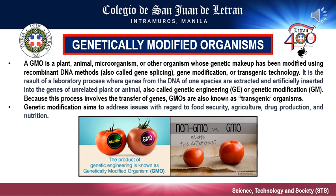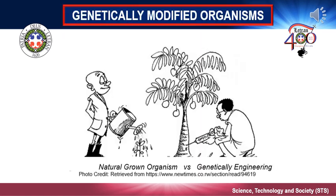Genes have been transferred within the same species, across species creating transgenic organisms, and even across kingdoms. New genes can be introduced or enhanced. Genetic modification aims to address issues with regards to food, food security, agriculture, drug production, and nutrition. The figure shows a man on the left naturally nurturing a plant to grow, while the man on the right is artificially introducing a gene from other organisms in order for the tree to progressively grow healthier and better than a naturally grown plant — a good example of a genetically modified organism.